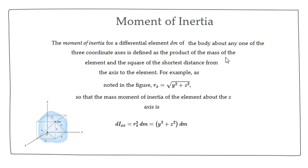All material, as far as we know, is defined by the periodic table from chemistry. Mass is made of at least one element from that table, sometimes combined. So the moment of inertia is a product of the mass of the element times the square of the shortest distance from the axis to that element.